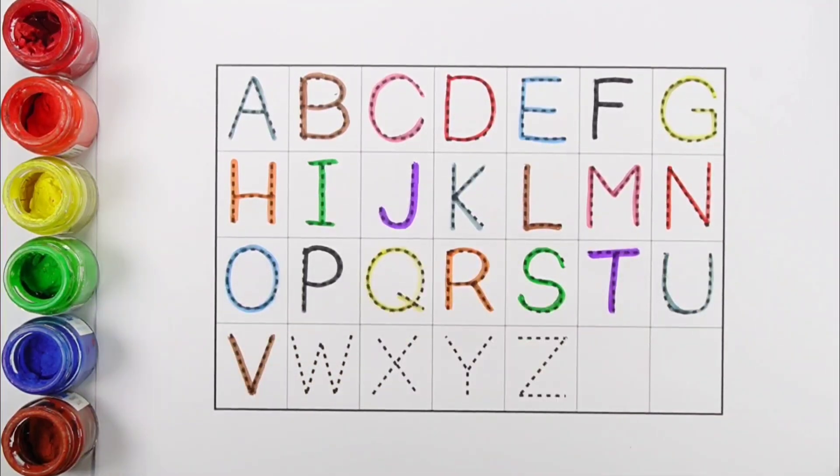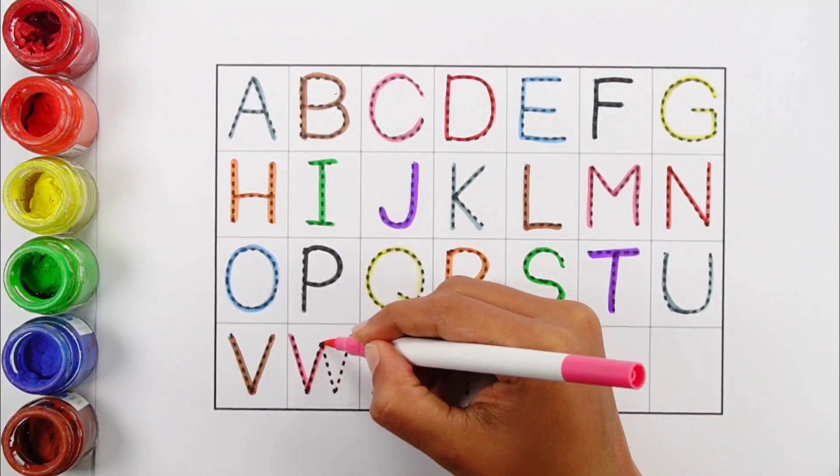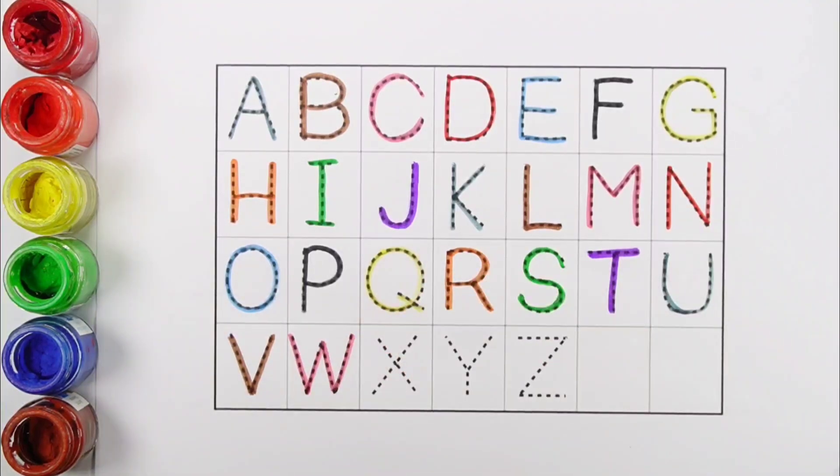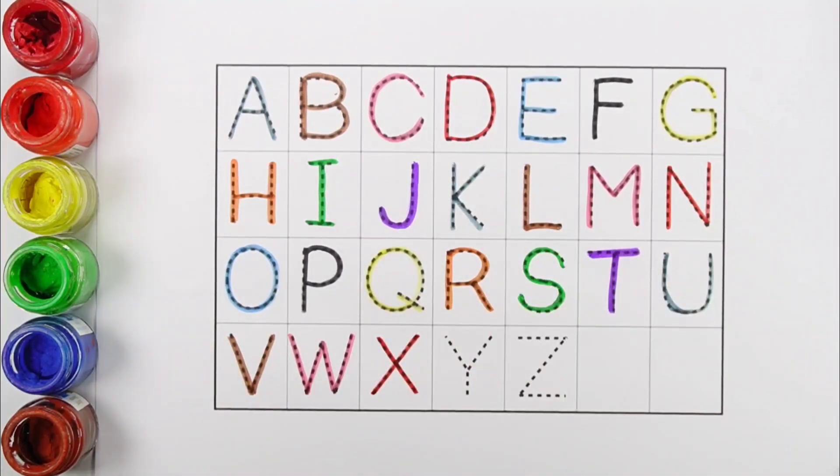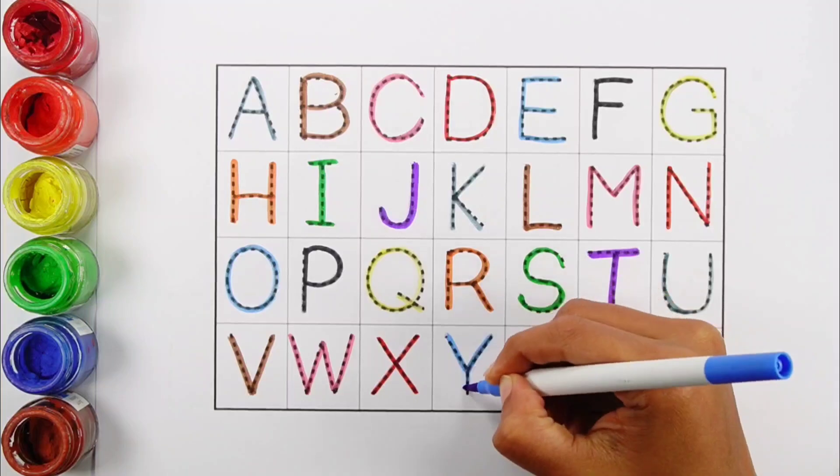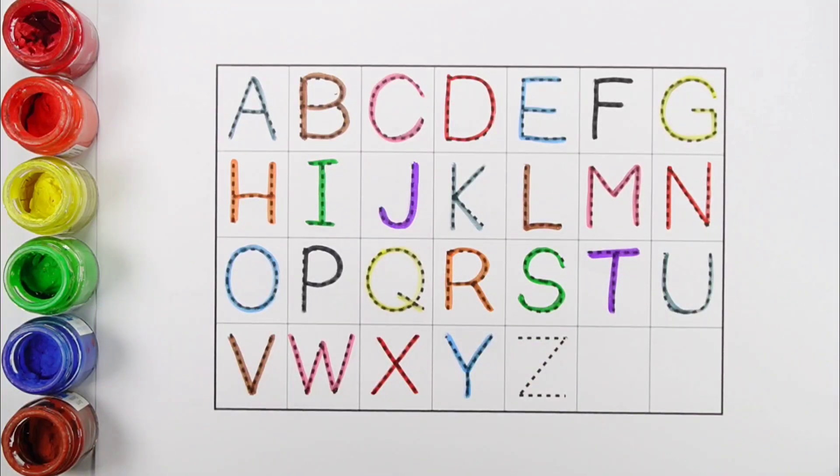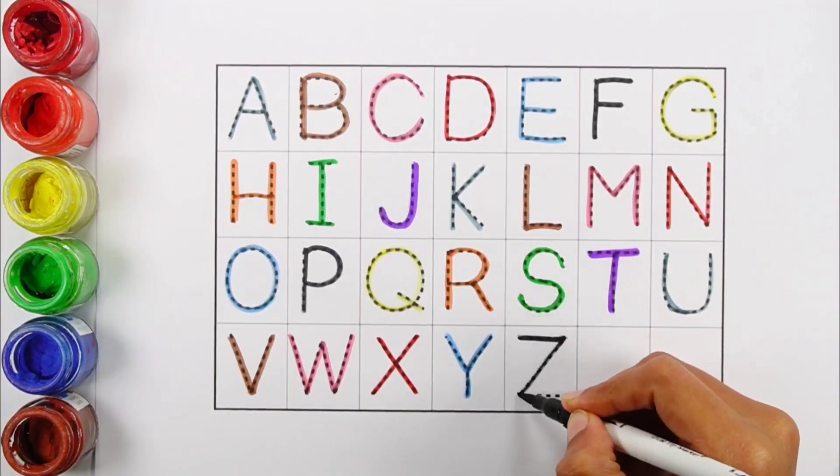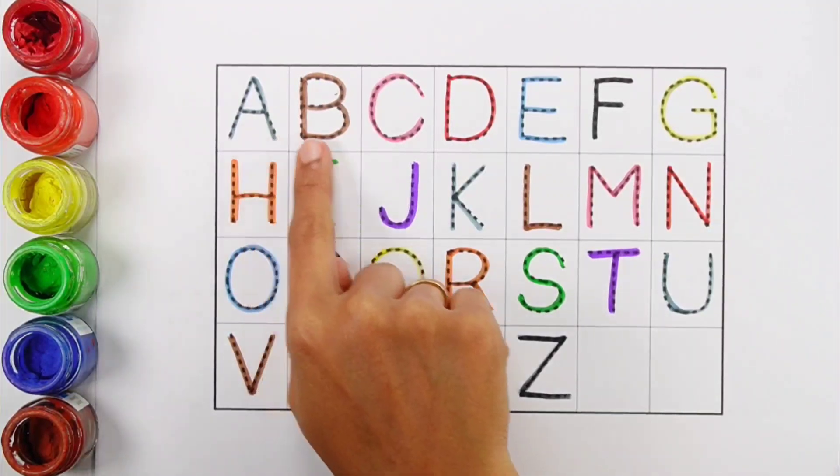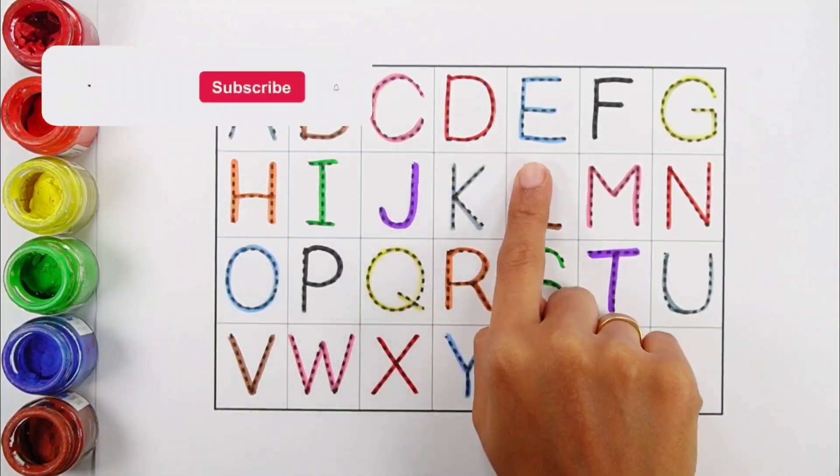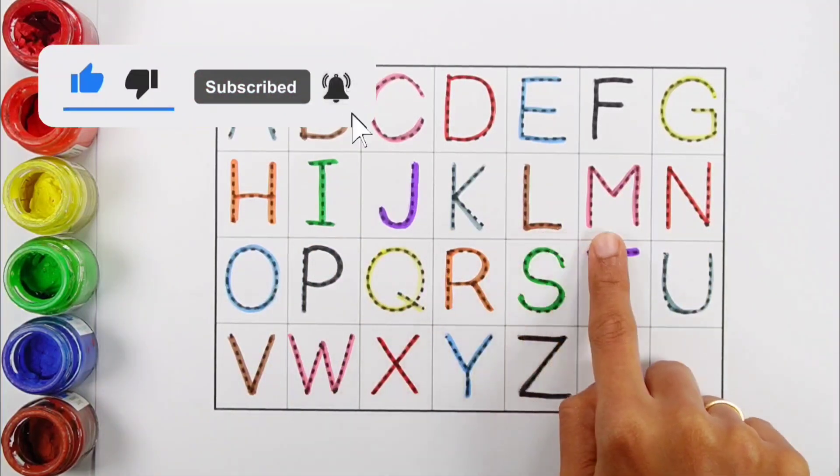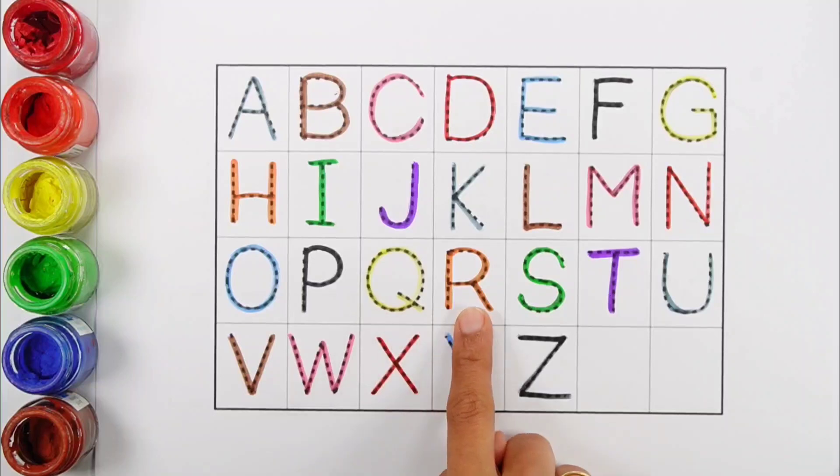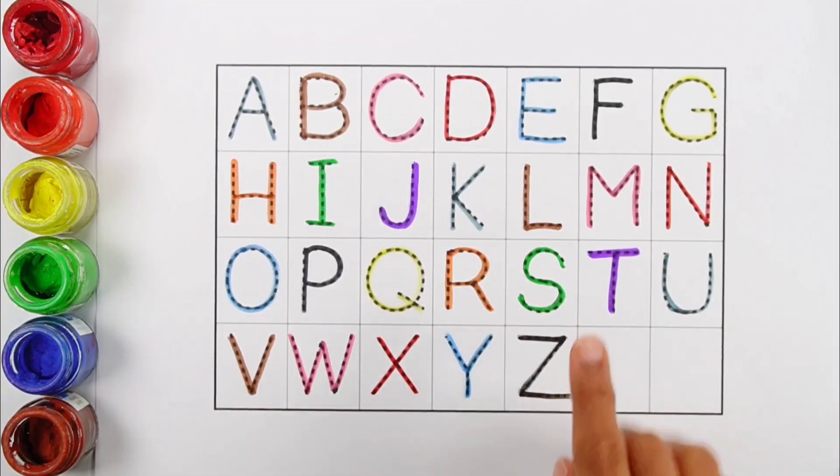V. V for Vulture. A, B, C, D, E, F, G, H, I, J, K, L, M, N, O, P, Q, R, S, T, U, V, W, X, Y, Z.